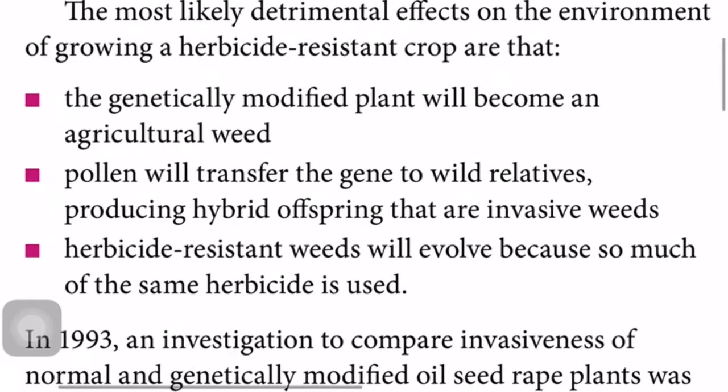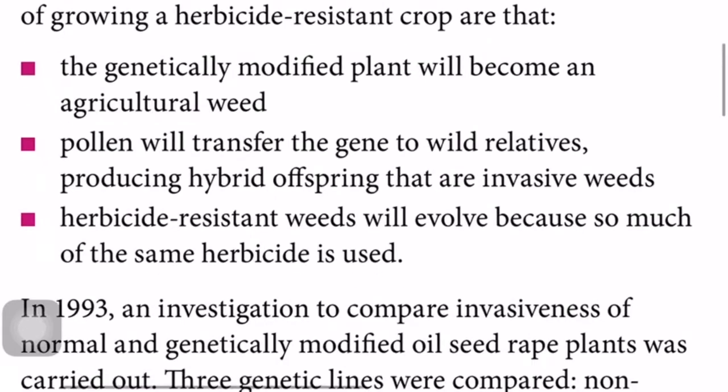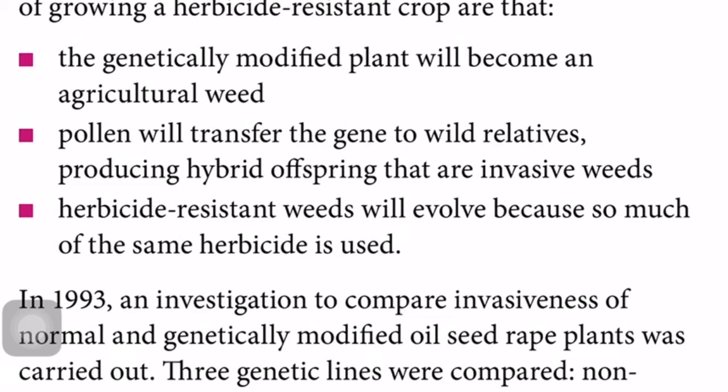A genetically modified crop can become an agricultural weed — it is not an unwanted plant as such, but we do not need that crop in a particular field, yet it will be present because it is herbicide-resistant, so we call it an agricultural weed. Pollen can also transfer the gene to wild relatives, producing invasive hybrid offspring that spread very rapidly.